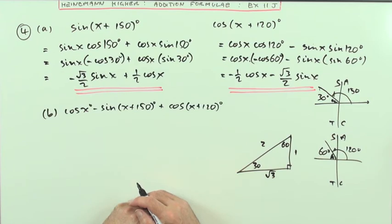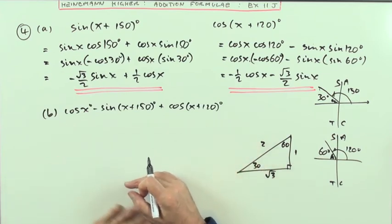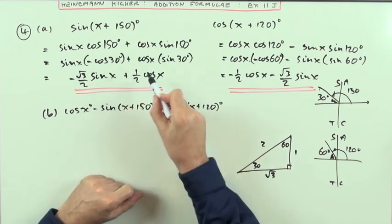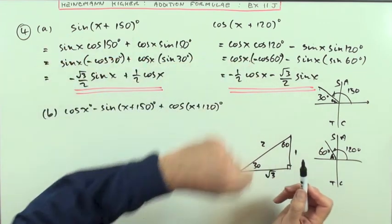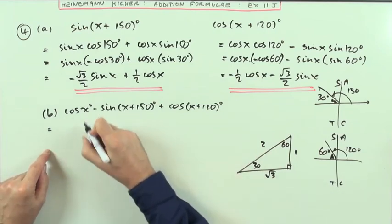Then in part B, find the exact value of this expression. Now, I know I've been a bit sloppy with omitting the degree signs all over the place. All those x's should have had degrees on them. Put them back in the final answer.